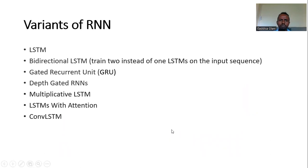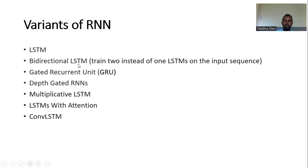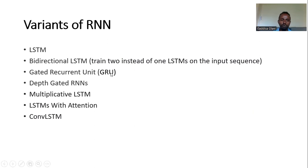If you want to see the function of the recurrent neural network for any sequential data, you can also see the vanishing gradient solution, and the bidirectional LSTM. Most of the time this kind of structure is used for machine translation. There is also the gated recurrent unit — the GRU — and more advanced variants: depth-gated RNN, multiplicative LSTM, LSTM with an attention model, and convolutional LSTM.